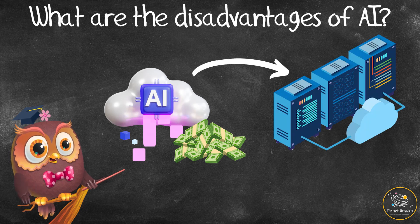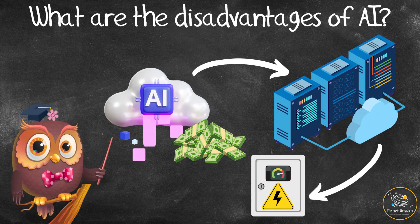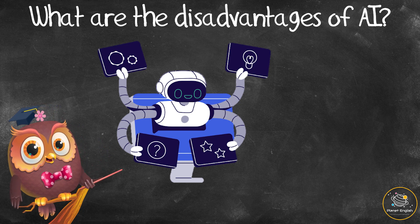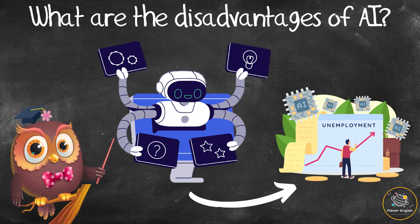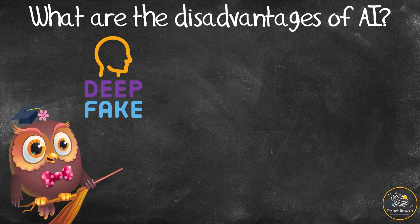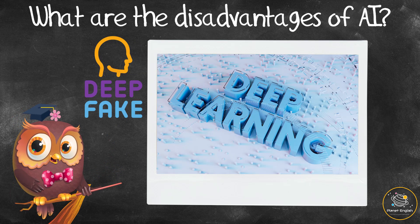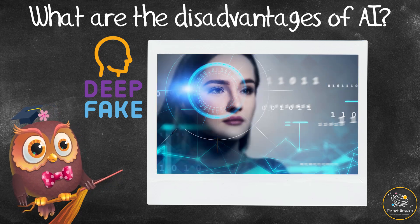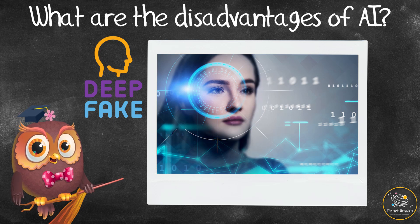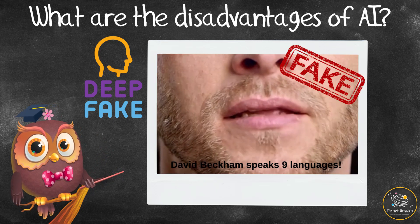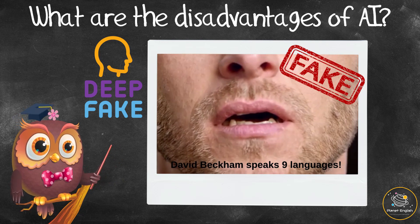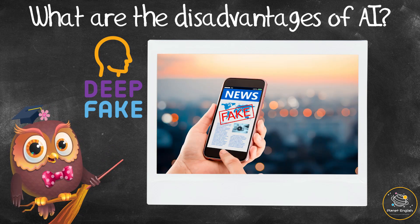What are the disadvantages of AI? The creation of AI is very expensive, as it needs very big and powerful computers which also use a lot of electricity. As AI can easily do work that involves repetitive and boring tasks, many people could lose their jobs. Deep fakes use a form of artificial intelligence called deep learning that can create images, audio, and video of fake events. For example, a deepfake video shows football star David Beckham speaking nine different languages, when he actually only speaks one. This technology can spread misinformation and cause confusion and panic.